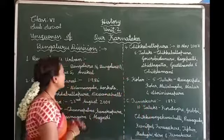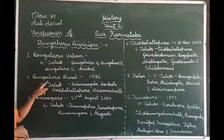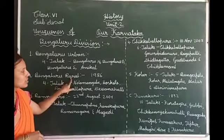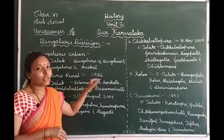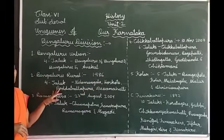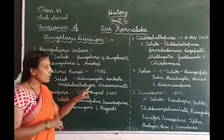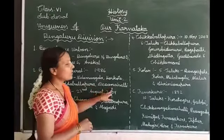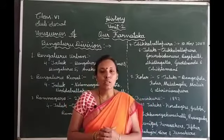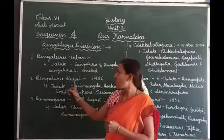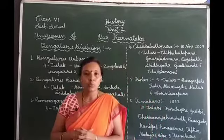This is about Bengaluru urban district. The next district is Bengaluru rural district, which was formed from Bengaluru urban district in the year 1986. There are 4 taluks: Nelamangala, Hoskote, Doddaballapura, and Devanahalli. In this district, Shivagange in Nelamangala is a famous religious place, and the Kempegowda International Airport is also located here.